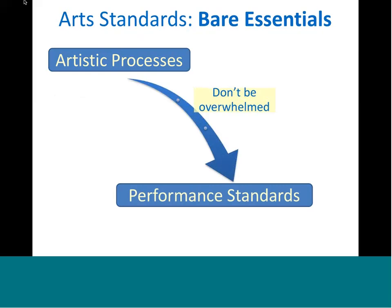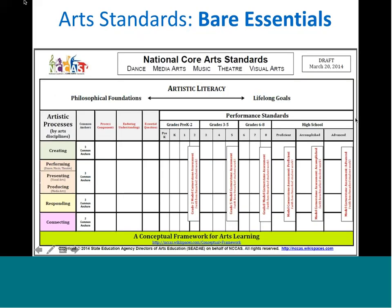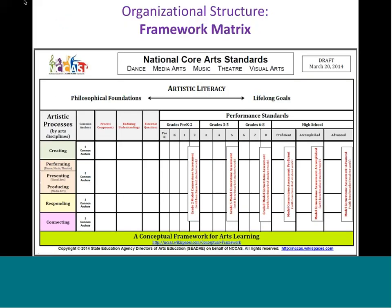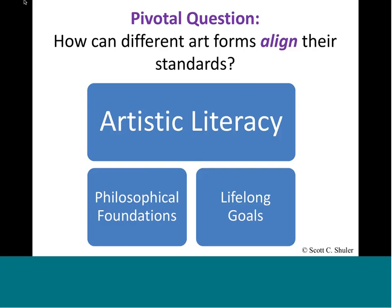With all that to think about, it's very easy for people to be overwhelmed by these new standards. The truth is, what you need to understand as a starting point is the artistic processes and the performance standards. The performance standards are the grade-by-grade or level standards that say what kids should learn in fifth grade or at the high school level. If you've got that under control, the rest is just extra material you can use for your benefit. This is a visual think piece to get a handle on the overall structure of the standards.